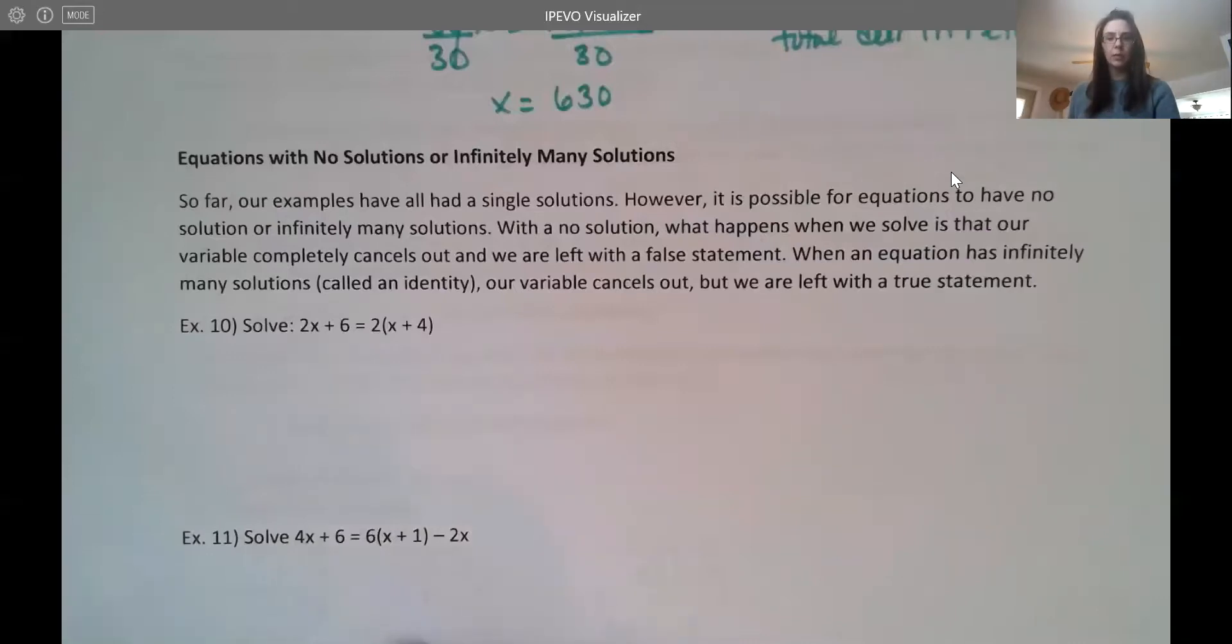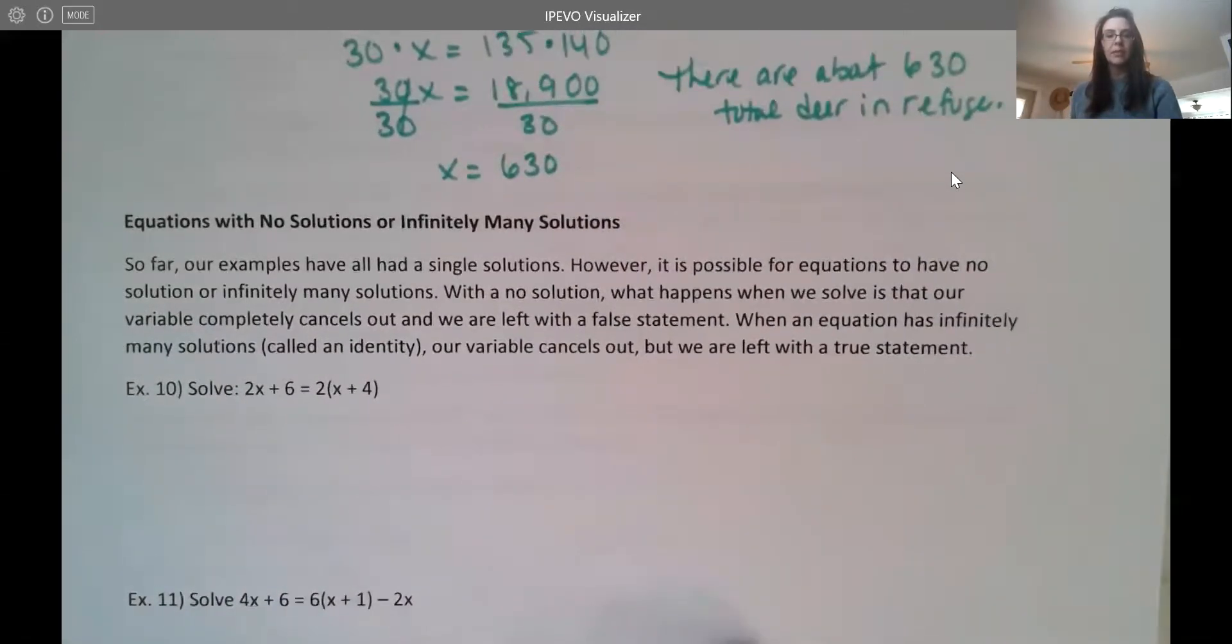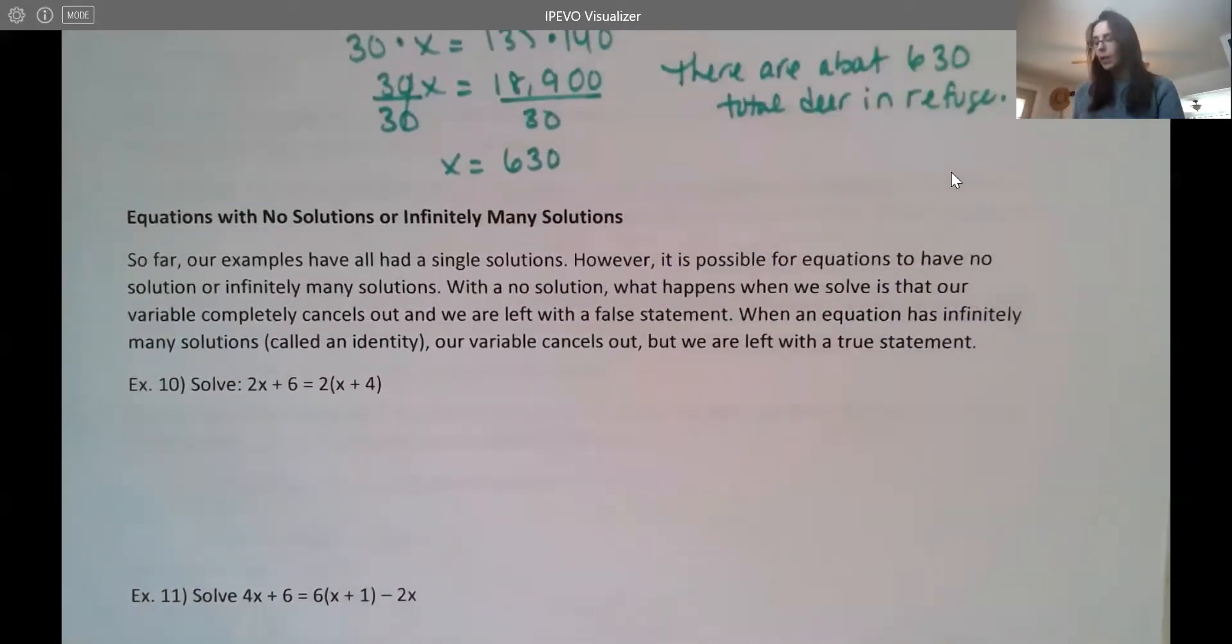So let's look at those two examples, and actually something very specific happens in both cases. So when we're solving something, when we get sort of a bizarre answer, either a no solution or infinitely many solutions, then when we're solving, our variables end up canceling out.